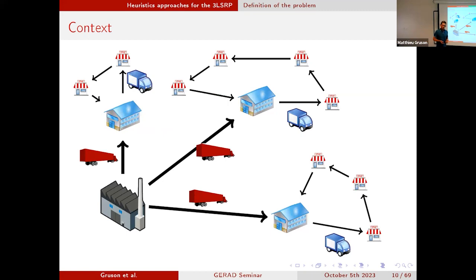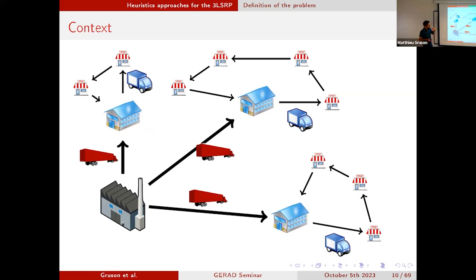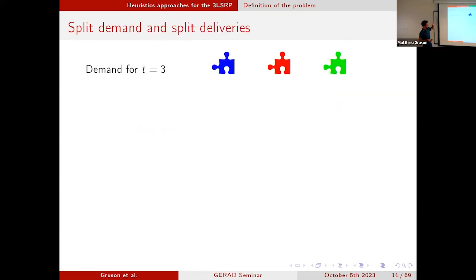In this problem, we consider quite some different constraints: production capacity constraints, transportation constraints — the capacity of the different trucks — and the roads, which can change from one period to another. The other thing we wanted to analyze in this project was the possibilities and gains of split demand and split delivery.